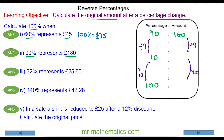We work out the amount for 10%, which is 180 divided by 9. So 10% is worth £20. Then we multiply that by 10 to work out 100%, which is £200. So 100% represents £200, meaning £200 is the original amount.